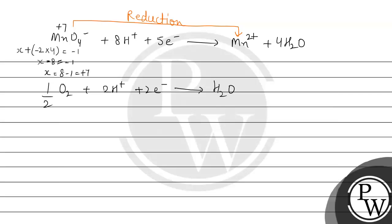We can see that the oxidation state of manganese decreases, which means reduction is occurring. Similarly, for oxygen: in elemental state O₂ the oxidation state is zero, and in H₂O the oxidation state of oxygen is −2. So the oxidation state decreases here too, meaning reduction is also occurring in this reaction.